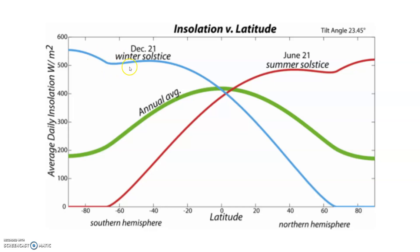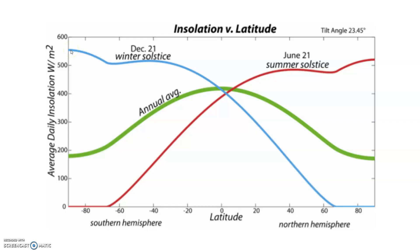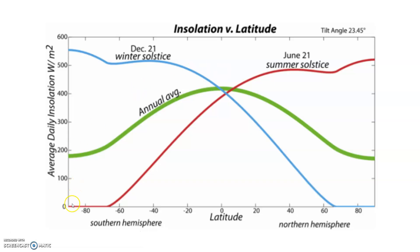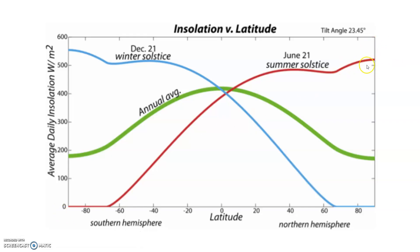On December 21st, the southern hemisphere is when it receives the most direct sunlight. But over here in the northern hemisphere, that's when it's receiving the least direct sunlight. And we see the opposite on June 21st — the least direct sunlight in the southern hemisphere and the most direct sunlight in the northern hemisphere. The equator is all about the same. This also shows just the annual average of the amount of sunlight received at each location.